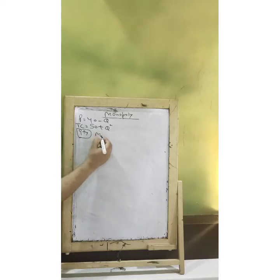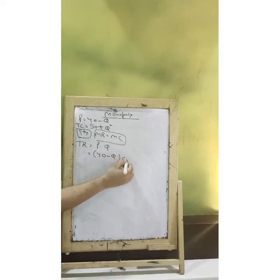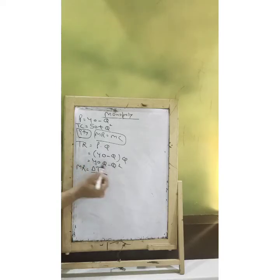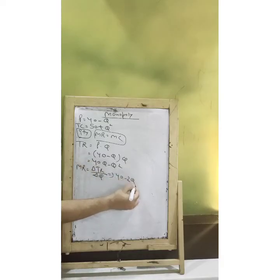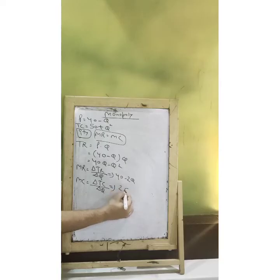I am going to use the MR equals MC approach. First I will solve TR which is P into Q. Going by the function, 40 minus Q into Q shall be 40Q minus Q squared. MR is the change in TR with respect to change in quantity, or in other words, I am differentiating this TR with respect to quantity, and what I am going to be left with is 40 minus 2Q. MC is the change in total cost with respect to change in quantity, so I am going to differentiate this total cost function with respect to quantity and I shall be left with 2Q.